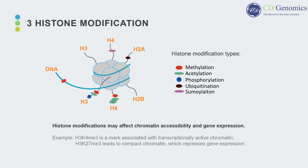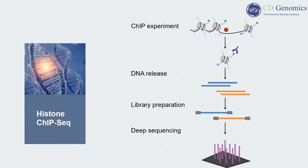Histone modifications may affect chromatin accessibility and gene expression. Chromatin immunoprecipitation, or ChIP, can be used to determine the presence of a specific histone modification. ChIP-seq combines ChIP with massively parallel DNA sequencing to profile histone modifications, also known as histone ChIP-seq.